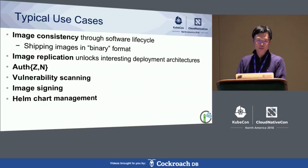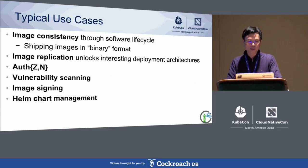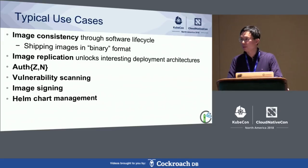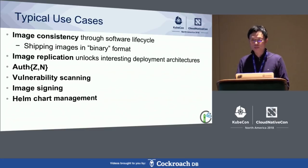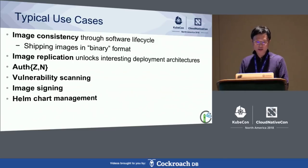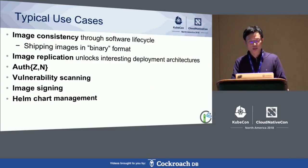Harbor also supports deployment on different platforms like Docker and Kubernetes. We use other open source projects like Docker Distribution, Clair for scanning, and content trust, all packaged into containers. After going through the basic introduction, I'll introduce some typical use cases that most of our users adopt in production: image consistency to maintain images across the software development lifecycle, image replication across different places, authentication and authorization for access control, vulnerability scanning, image signing for provenance, and Helm chart management.